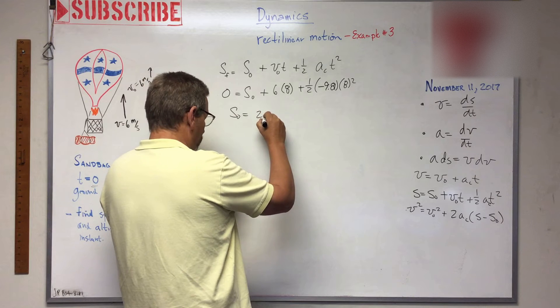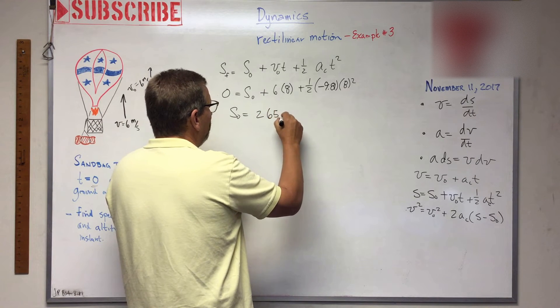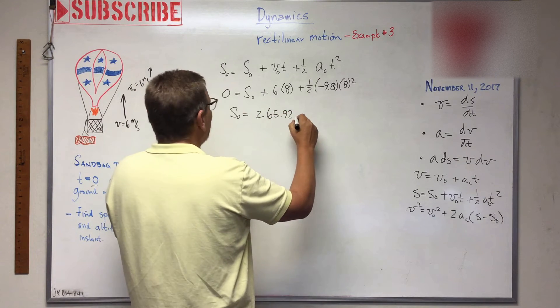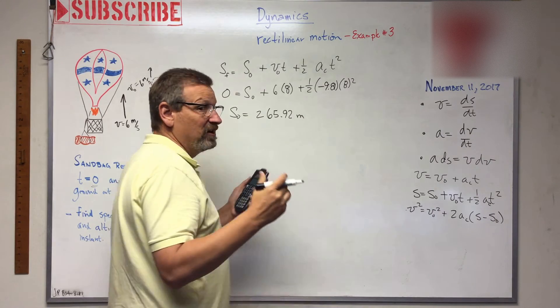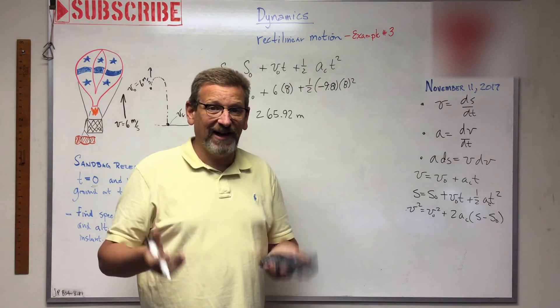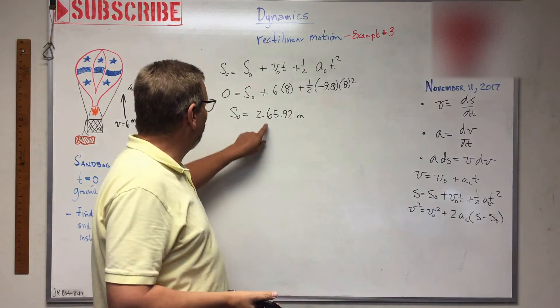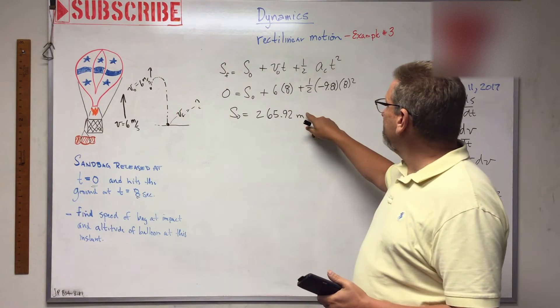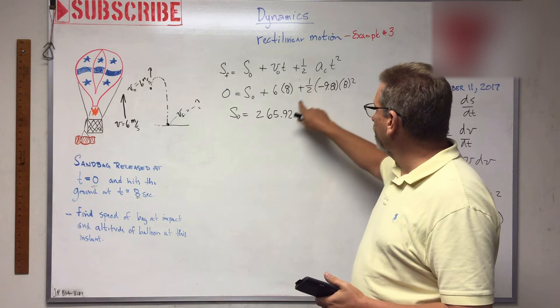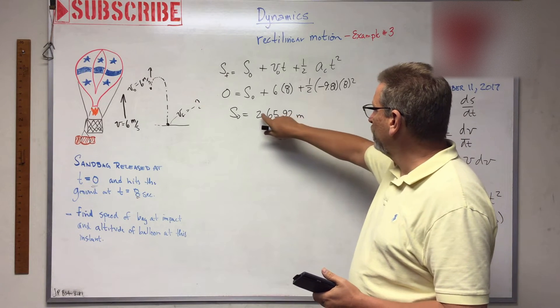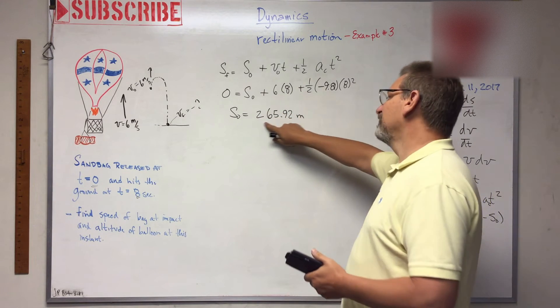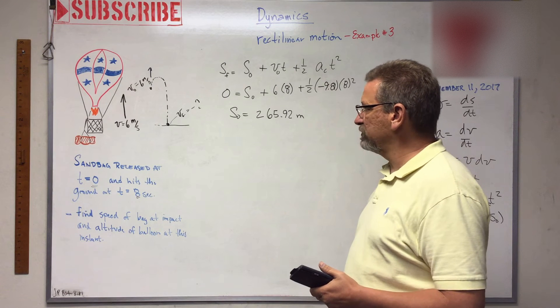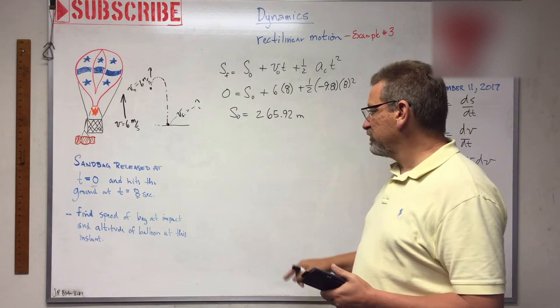It's 265.92 negative, but when I move it to the other side it becomes positive. So 265.92 meters. So that was the original height of the balloon. That is how far that bag traveled before it reached the ground. For eight seconds it traveled, so in order to do that it had to travel 265.92 meters.